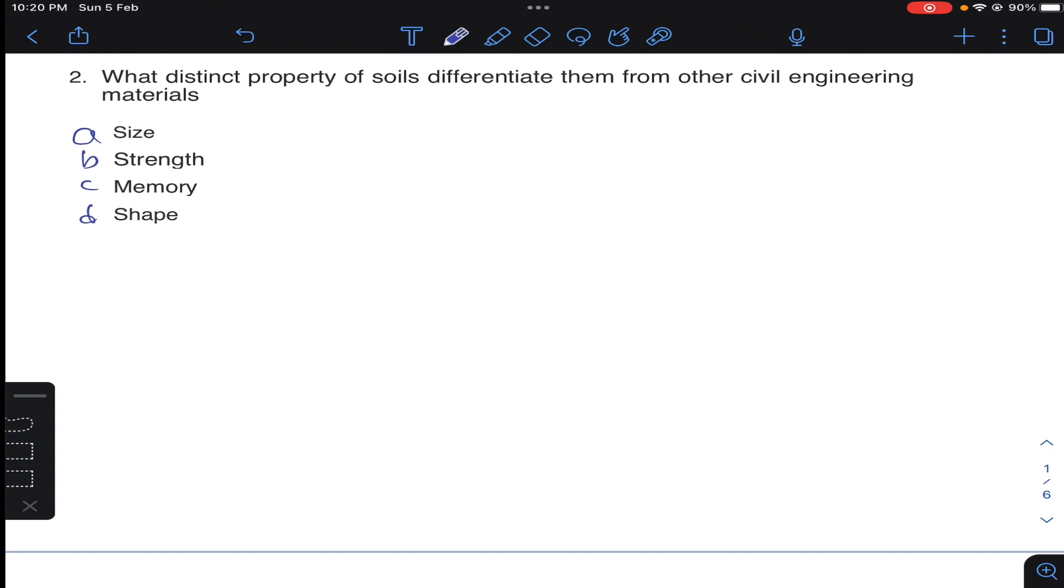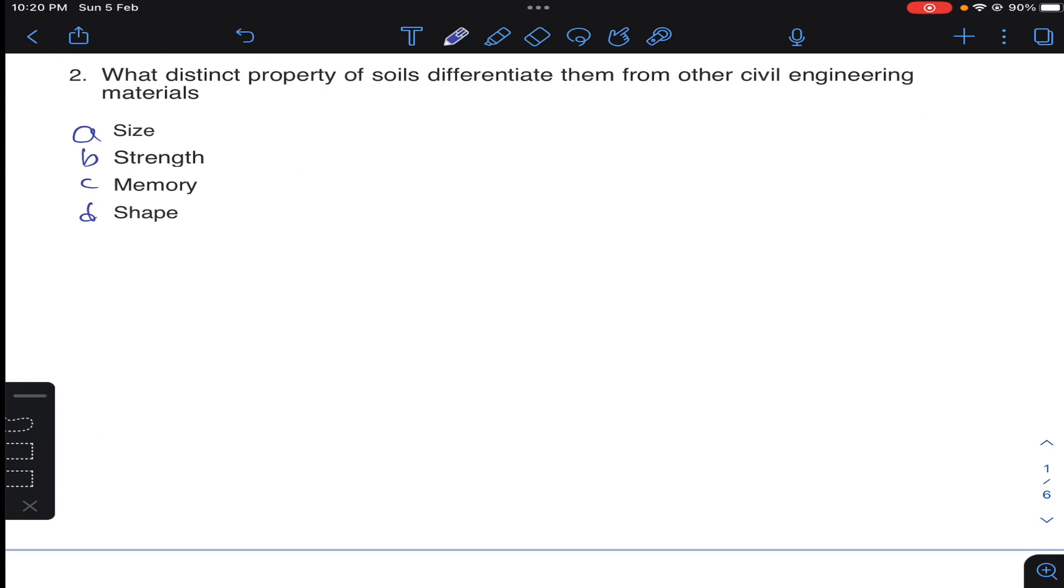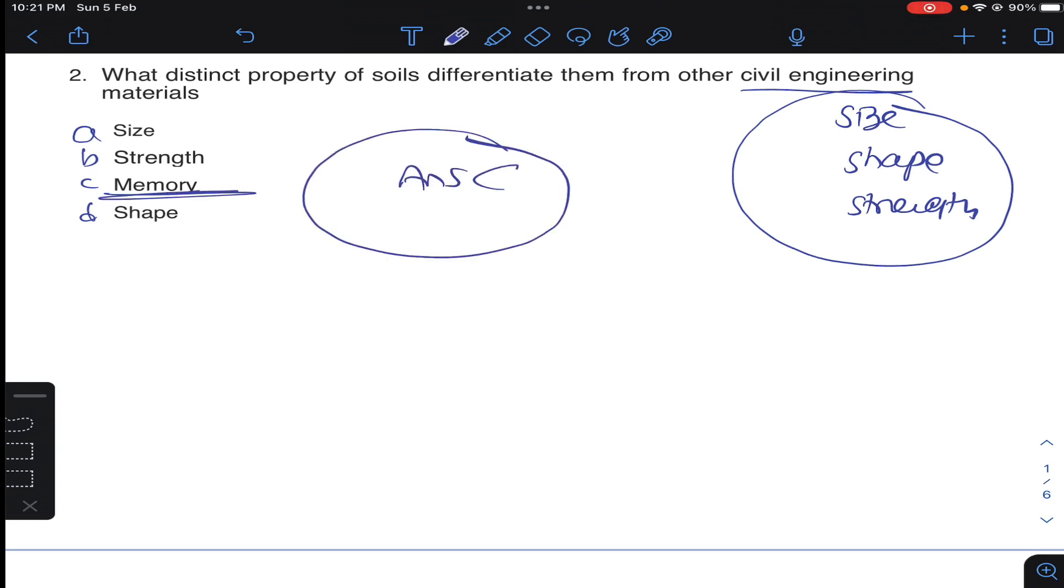Coming to question number two: what distinct property of soil differentiates them from other civil engineering materials? Generally civil engineering materials will have size, shape, and strength. They do not have memory, so answer C for question number two.